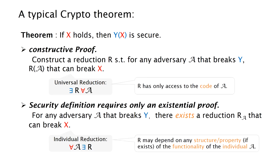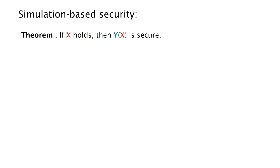And we also note that there may be a huge gap between these two reduction methods. In the universal reductions, R has only access to the code of A, but the individual reduction R may depend on any properties of the functionality of A.